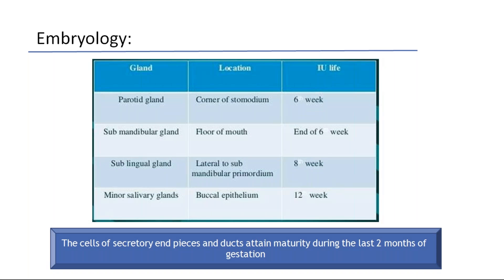Coming to the glands and from which intrauterine life they start to grow: parotid gland location is corner of stomodeum — from the sixth week of intrauterine life. Submandibular gland location is the floor of the mouth — end of the sixth week. Sublingual gland is lateral to the submandibular primordium — from the eighth week. Minor salivary glands location is buccal epithelium — from the 12th week. The cells of secretory end pieces and ducts attain maturity during the last two months of gestation.